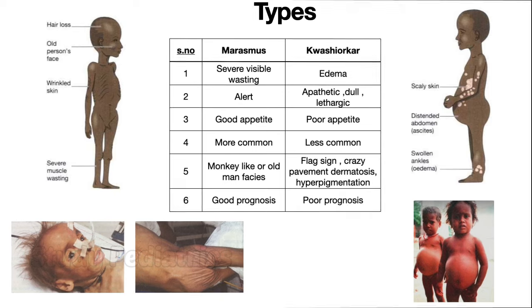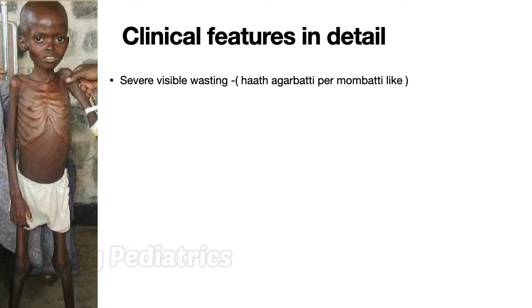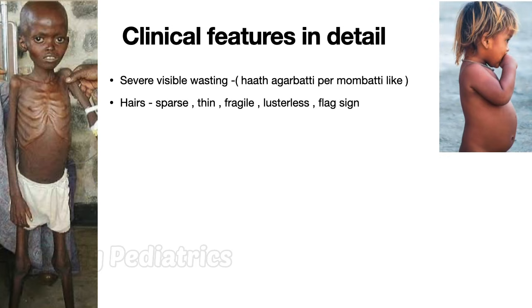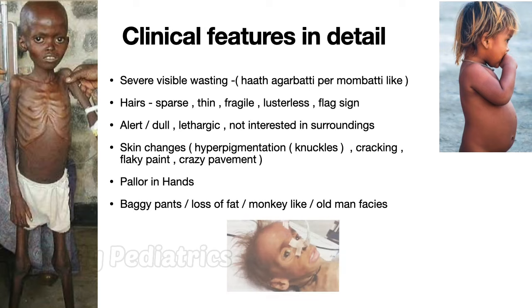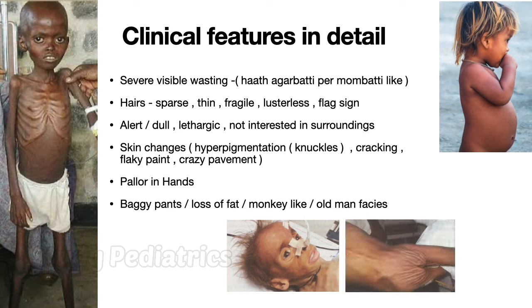Let's look at clinical features in detail. Through general examination one can appreciate severe visible wasting. Coming to the head: hairs are sparse, thin, fragile, and lusterless, with alternating bands of hypopigmentation called the flag sign. The patient may be alert and staring, or dull, lethargic, or apathetic. Look for skin changes, especially hyperpigmentation around knuckles, indicating B12 deficiency.